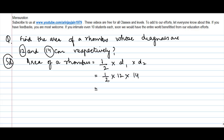This is as simple as it can get. 6 times 14 gives us 84 centimeters square. So the area of a rhombus whose diagonals are 12 centimeter and 14 centimeter is 84 centimeter square.